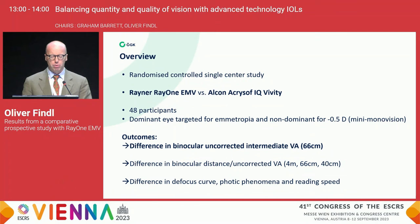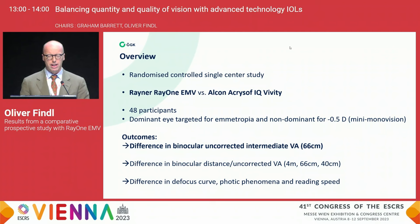We had 48 patients in this trial, and we targeted half a diopter of mini-monovision, because that's something I like to do in practice. The main outcome was difference in binocular uncorrected intermediate visual acuity at 66 centimeters. And then obviously we measured all other things as well, but that's what the trial was powered to.